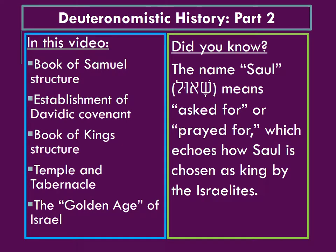In this video, we will talk about the second part of the Deuteronomistic history. We will begin by talking about the Book of Samuel, the establishment of the Davidic Covenant, then moving into the Book of Kings, and a discussion of the Temple and Tabernacle, as well as the Golden Age of Israel. The next video in this series will cover in more detail the Kings we see in the Book of Kings.